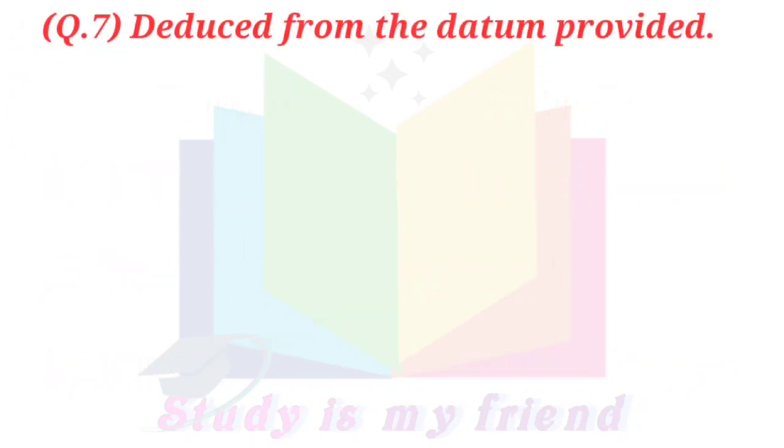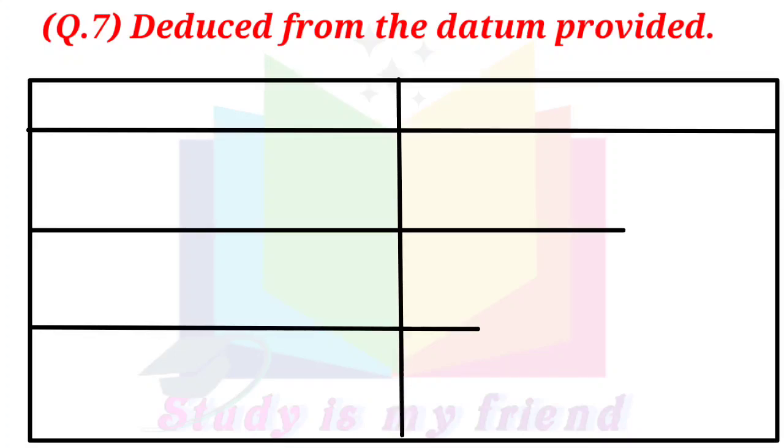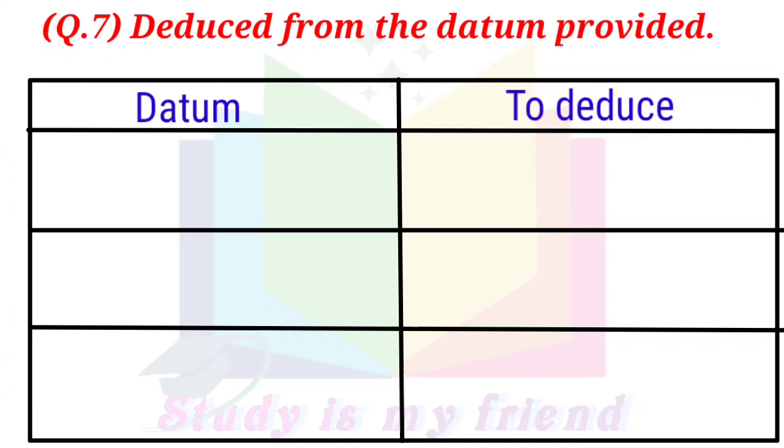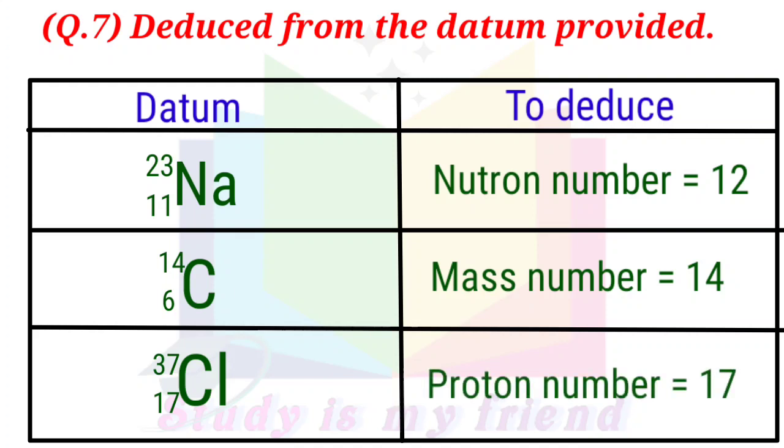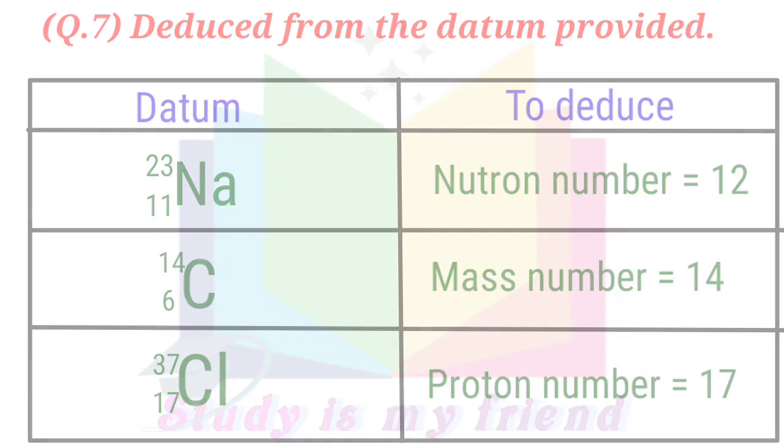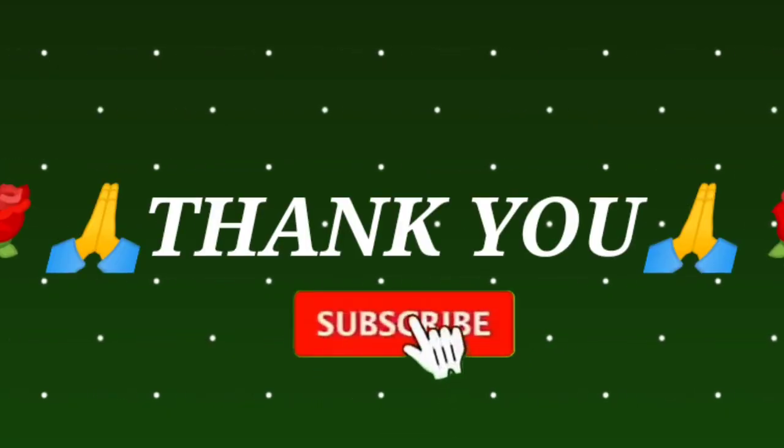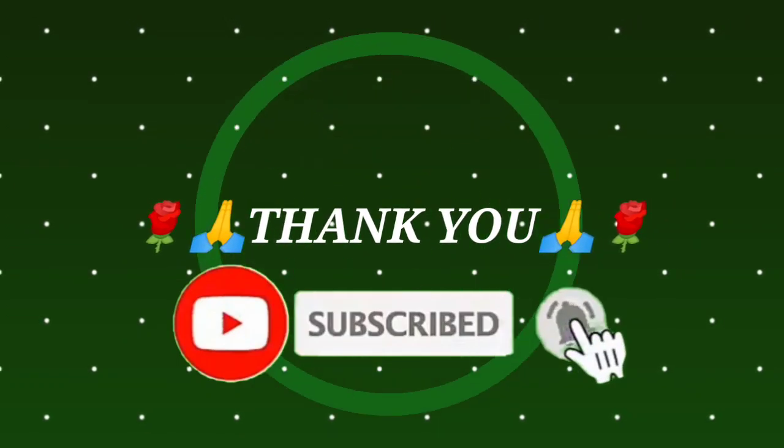Question 7: Deduce from the datum provided. Sodium: neutron number equals 12. Carbon: mass number equals 14. Chlorine: proton number equals 17. Thank you.